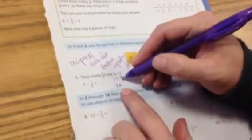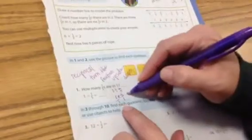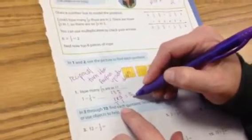So the reciprocal of one-fifth is 5 over 1. Then, it's a very doable problem. You put the whole number over 1, you multiply, and you get 5 over 1, and the answer is 5.